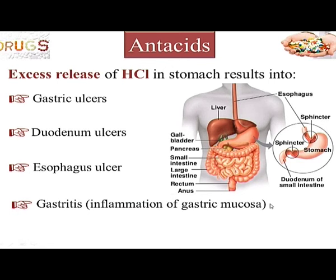Once this unwarranted acid accumulates in the stomach, it starts to corrode the epithelial lining of neighboring tissues such as the gastric epithelium, creating ulcers — small wounds. It can create gastric ulcers in the stomach, duodenal ulcers, esophageal ulcers, or in general it can cause gastritis, which is inflammation of the gastric mucosa lining the stomach cavity. Excessive release of HCl is therefore a pathogenic condition.